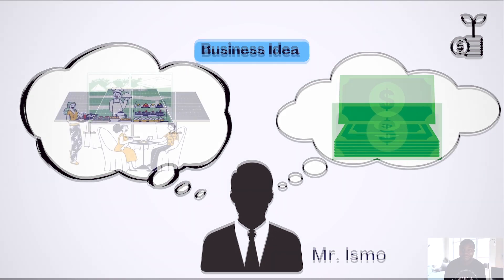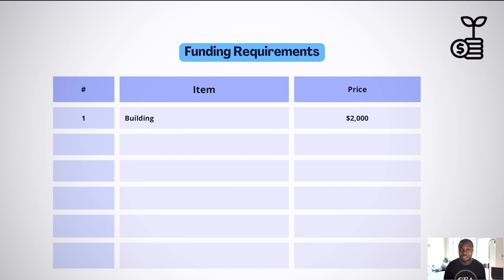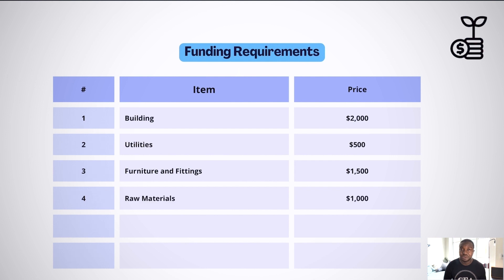The land and building he wishes to acquire for his operation costs $2,000. He also has to pay $500 for utilities, and he needs $1,500 for furniture and fit-ins. He also needs $1,000 to purchase raw materials, and finally he needs $5,000 to meet general and administrative expenses.